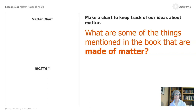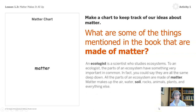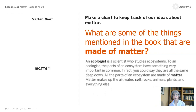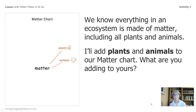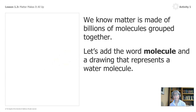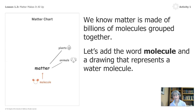We're going to make a chart to track our ideas about matter, and you can do this in your packet as well. What are some of the things mentioned in the book that are made of matter? The book says all the parts of an ecosystem are made of matter — matter makes up air, water, soil, rocks, animals, plants, and everything else. We know everything in the ecosystem is made of matter, including all plants and animals. I'll add plants and animals to our matter chart. We know matter is made up of billions of molecules grouped together. Let's add the word molecule and a drawing that represents a water molecule. You can pause the video to do that.